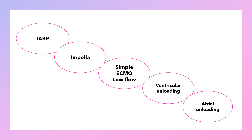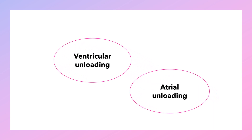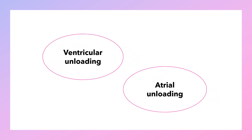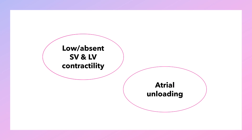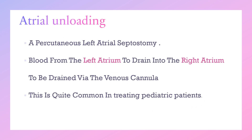The third option for left ventricular unloading is to create additional flow on the ECMO side through ventricular or atrial unloading. Ventricular unload is preferable if there is low or absent volume and low or absent left ventricular contractility. Atrial unloading should be done if there is aortic regurgitation or mitral regurgitation. Atrial unloading is done through percutaneous left atrial septostomy, where a shunt is created with a percutaneous blade or balloon septostomy under transesophageal echo guidance, draining blood from the left atrium into the right atrium via the venous cannula. This is common in treating pediatric patients.